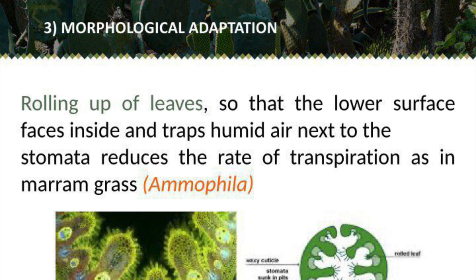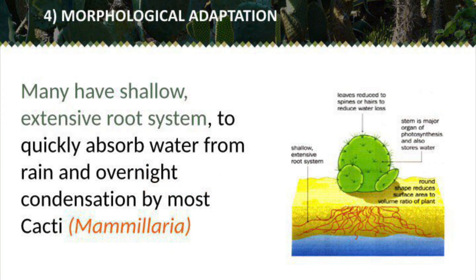The third morphological adaptation is the rolling up of leaves so that the lower surface faces inside and traps humid air next to the stomata, reducing the rate of transpiration, as in merum grass. The fourth morphological adaptation is that many xerophytes have a shallow, extensive root system to quickly absorb water from rain and overnight condensation, as seen in most cacti.